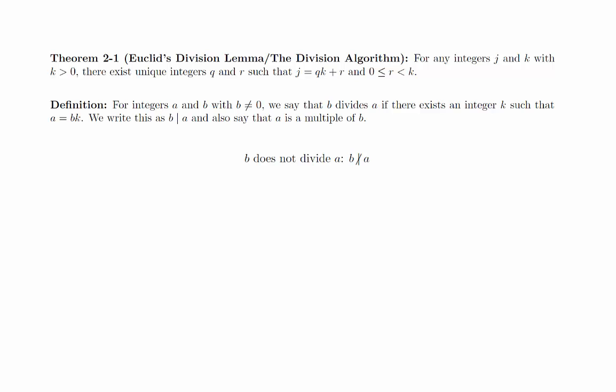There are a number of easy examples to consider to help think about this definition. 6 divides 24 because 6 times 4 is 24. 6 does not divide 33 because there is no integer k such that 6 times k equals 33. 1 divides a for any integer a because 1 times a equals a, and negative 1 divides a because negative 1 times negative a equals a.